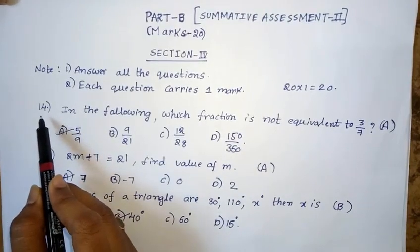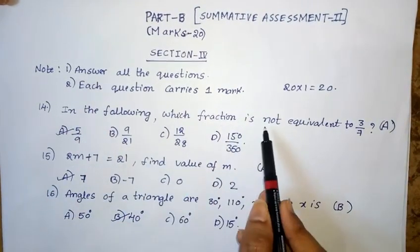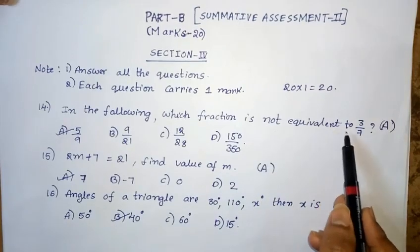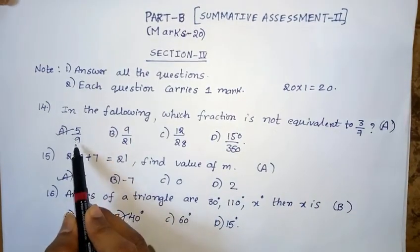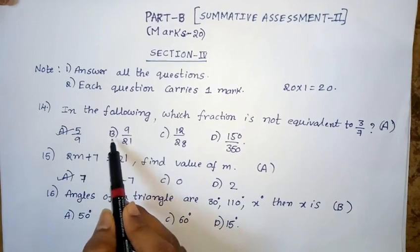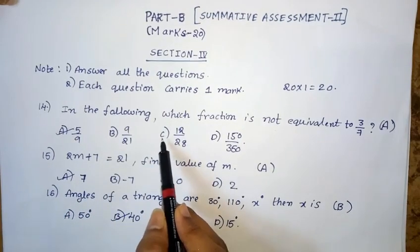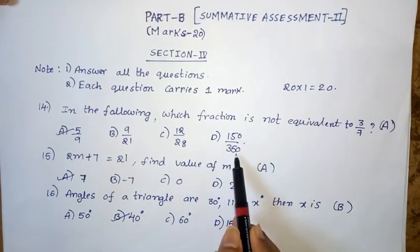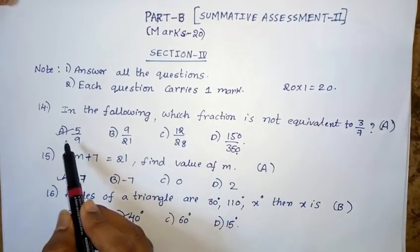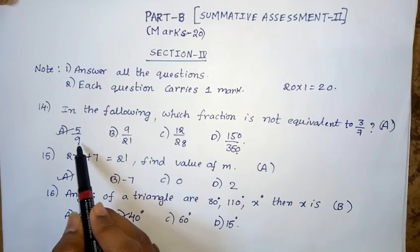Fourteenth question: In the following, which fraction is not equivalent to 3 by 7? Option A: 5 by 9. Option B: 9 by 21. Option C: 12 by 28. Option D: 150 by 350. Among the four options, option A — 5 by 9 — is the right answer.